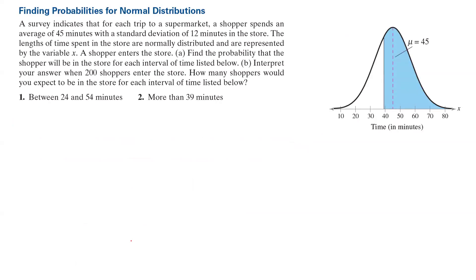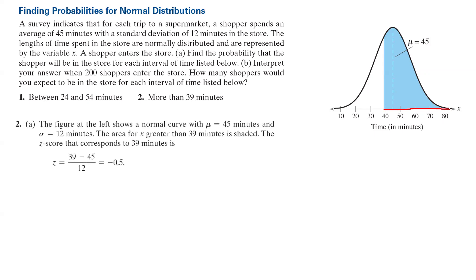Now let us calculate more than 39 minutes. For more than 39 minutes, you are looking at the shaded area on the right-hand side. 39 minutes is here and goes up to the right-hand side. Again, you are allowed to use x or z. If you decide to use z, you need to follow the formula x minus the mean divided by standard deviation, which is negative 0.5.